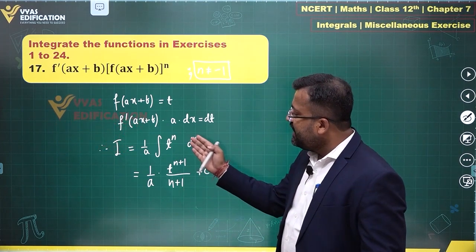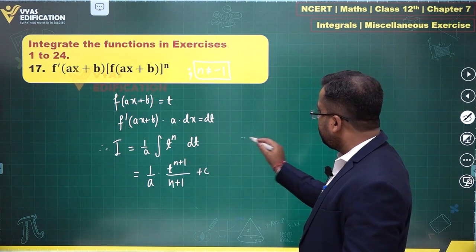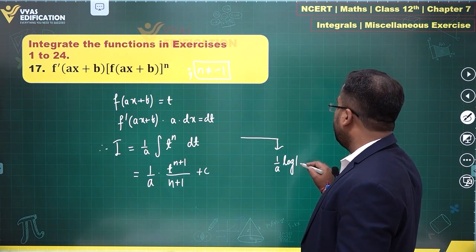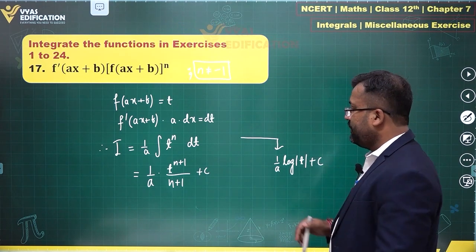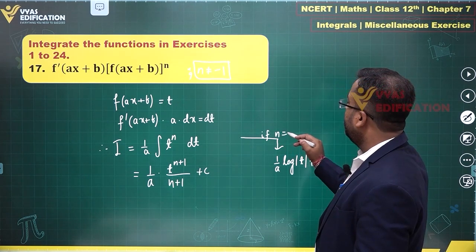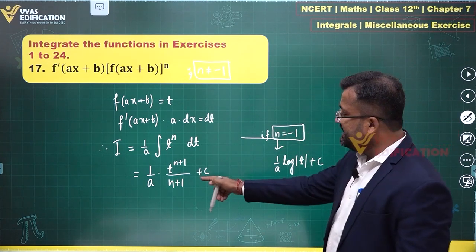you can write another result over here. Had n been equal to minus 1, then this would have gone to this direction: log modulus t plus c. If n equal to minus 1, otherwise this is the answer that we are looking forward to.